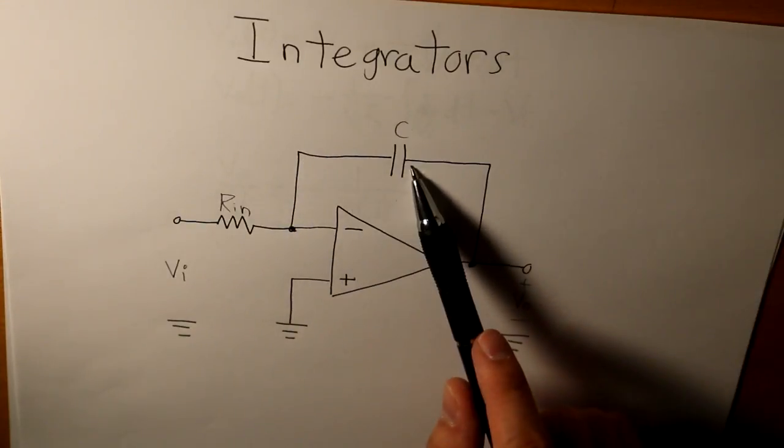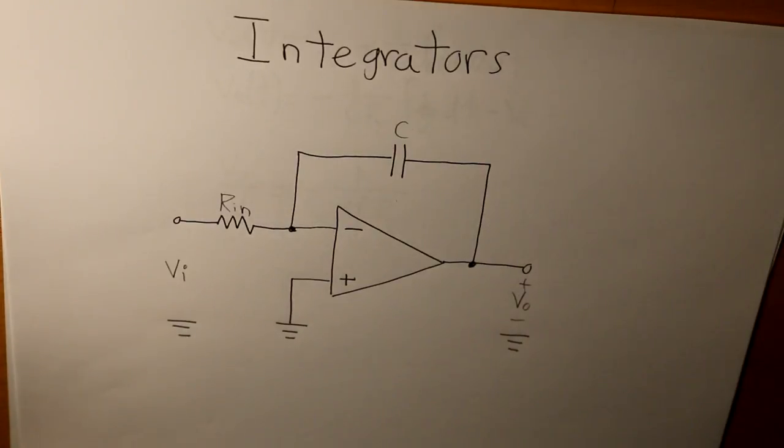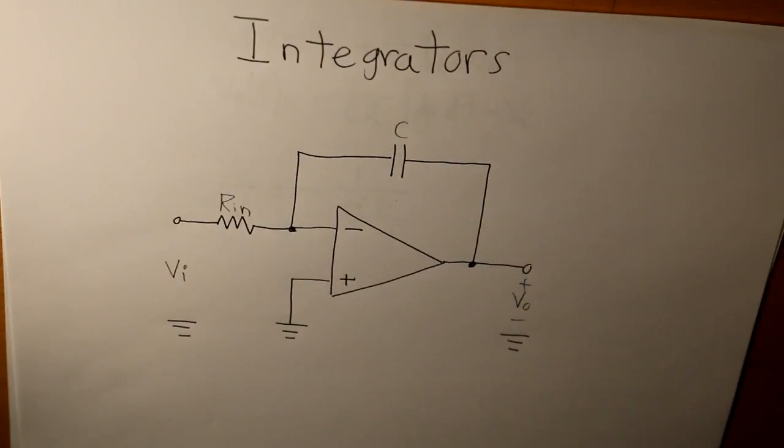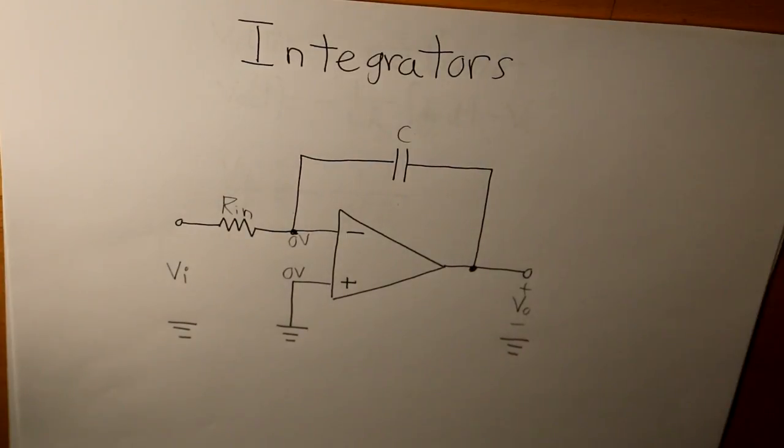Then it goes here, passes through this capacitor, and then it touches through the output voltage. Now when it goes through the capacitor, what it does is that it charges, and that's where the integral magic happens. I also want to label here that this is zero voltage and this is zero voltage, indicating that it's an ideal op amp.